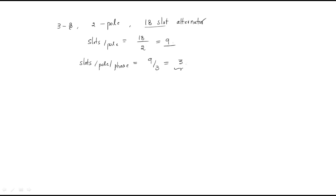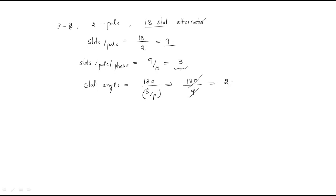The slot angle gamma equals 180 divided by slots per pole, that is 180 / 9 = 20 degrees. So the slot angle gamma equals 20 degrees. Every slot angle consists of 20 degrees — this is the slot angle.